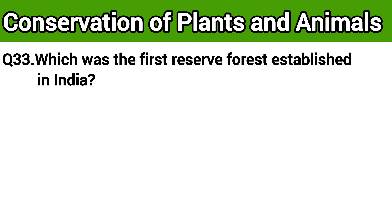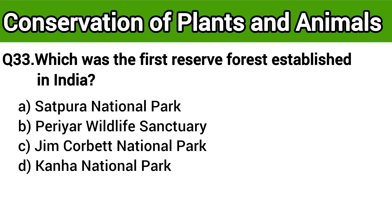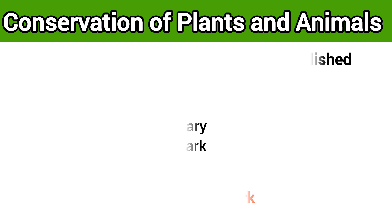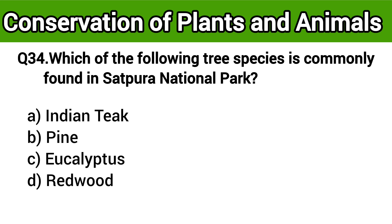Question number 33: Which was the first reserve forest established in India? The right answer is option A: Satpura National Park. Question number 34: Which of the following tree species is commonly found in Satpura National Park? The right answer is option A: Indian teak.